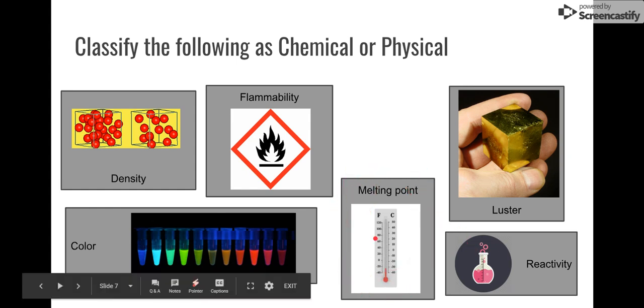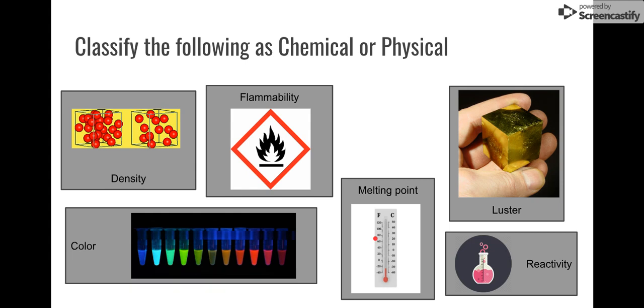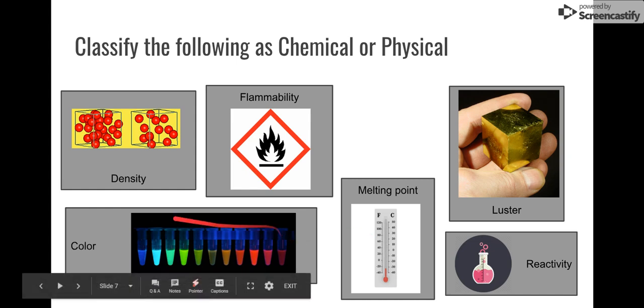Melting point. The same goes with boiling point. Both of those could be our physical properties. When you melt something, you are not changing it chemically. You are just changing basically its density and its kinetics, how fast or slow the particles are moving.